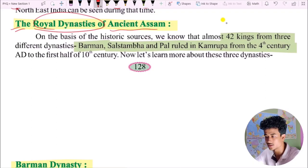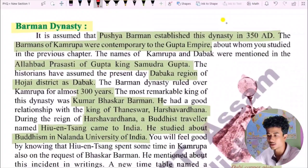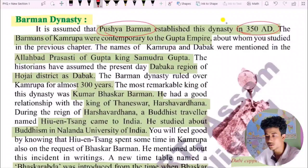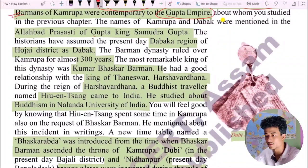On the basis of historical sources, we know that almost 42 kings from three different dynasties ruled from the 4th century AD to the first half of the 10th century. The Brahman dynasty of Kamarupa was contemporary to the Gupta Empire. The names of Kamarupa and Davaka were mentioned in the Allahabad Prashasti of king Samudragupta.